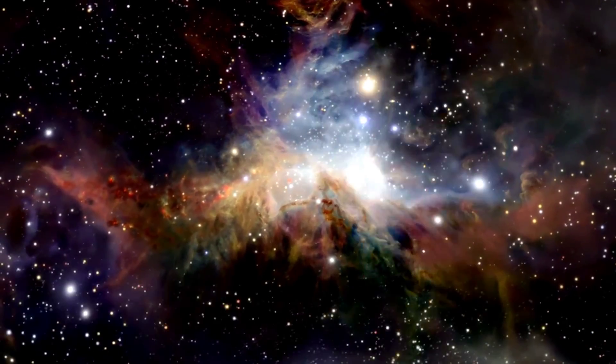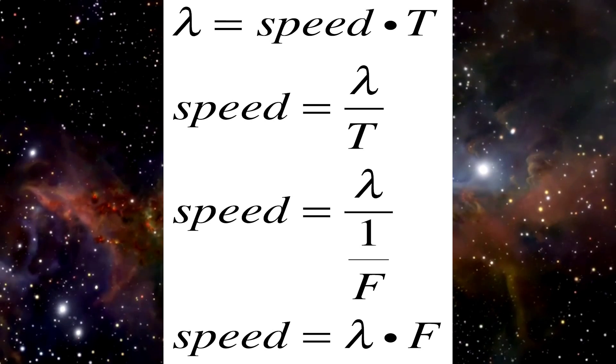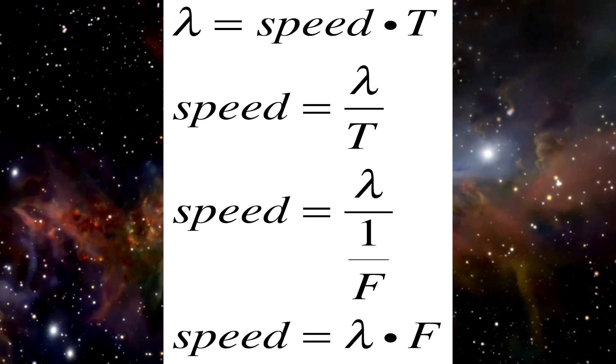This will eventually result in the following. So the speed of the wave can also be calculated by multiplying the wavelength of the wave times the frequency of the wave. Of course, this knowledge can also be applied to calculate the frequency or the wavelength of the wave.